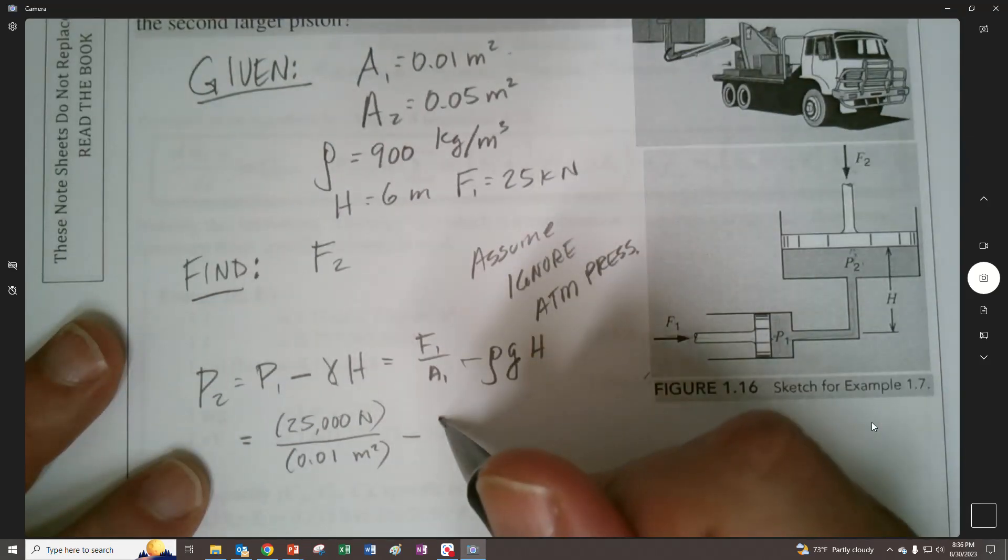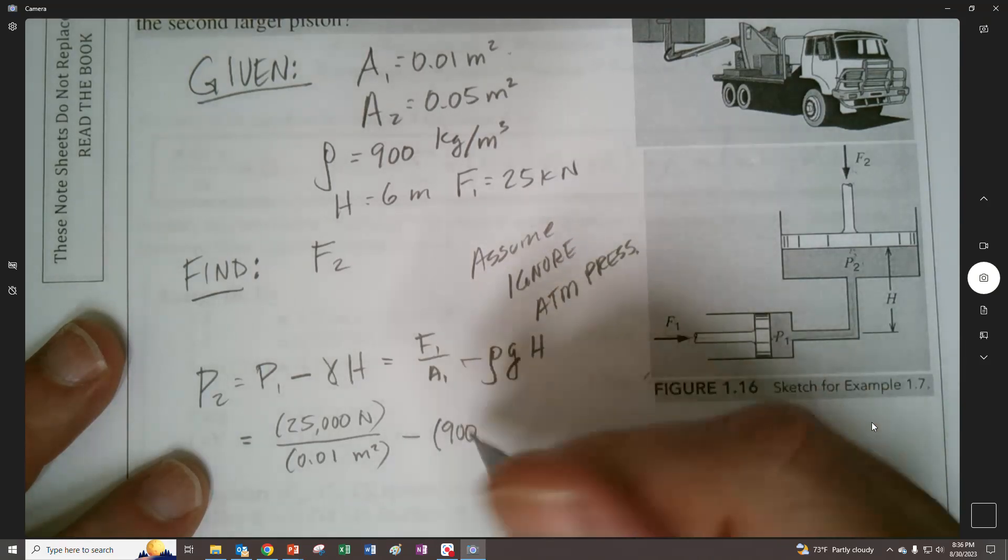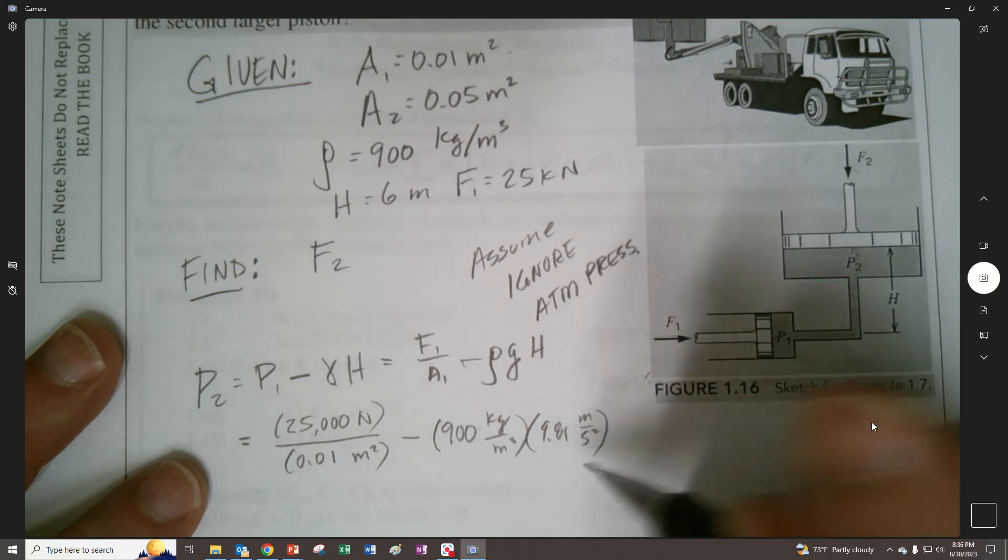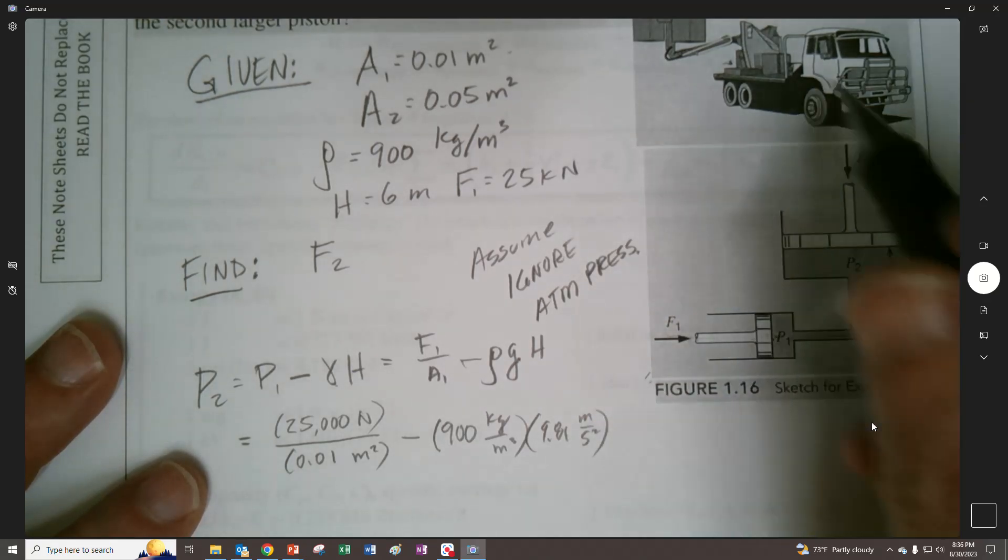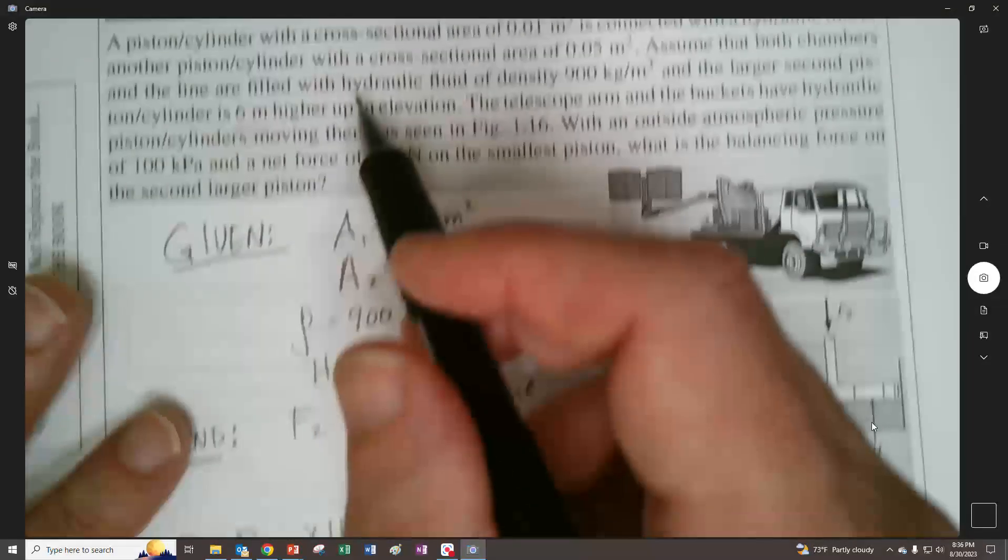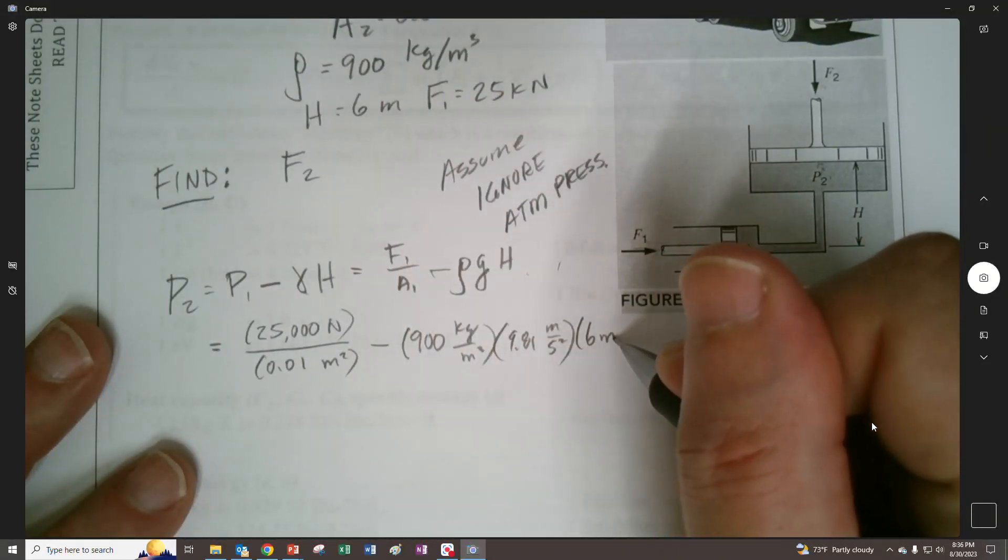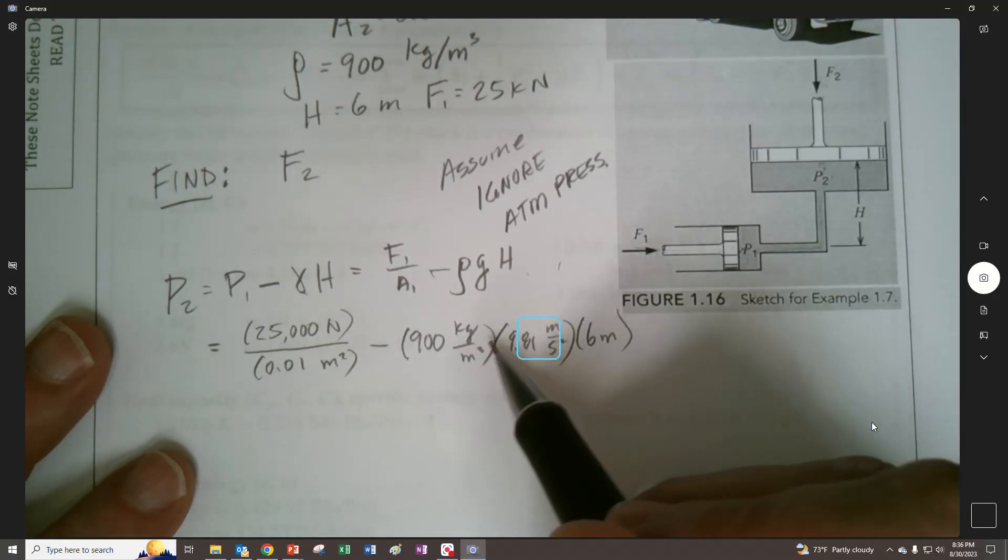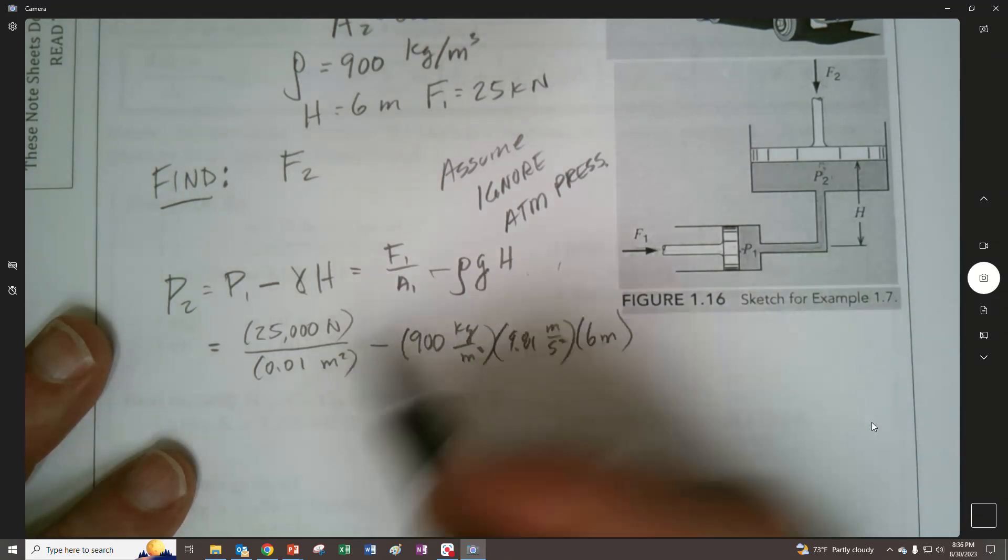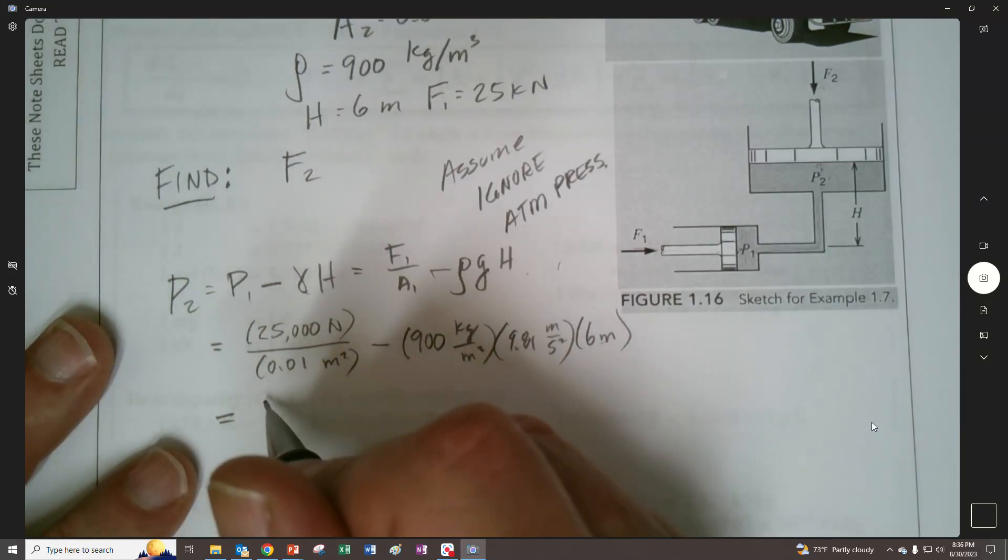And then minus, and the density, did they tell us the density of the fluid? They did. 900, and I started writing units, so let's keep going with that. And 9.81 meters per second squared. And then the distance, where'd they give me the distance? Six meters. That's not a lot. Six meters. Because let's see what's going to happen here is we're going to get newtons per cubic meter, but then multiply it by meters, and we'll get newtons per meter squared, newtons per meter squared. We're going to be newton per meter squared thing.